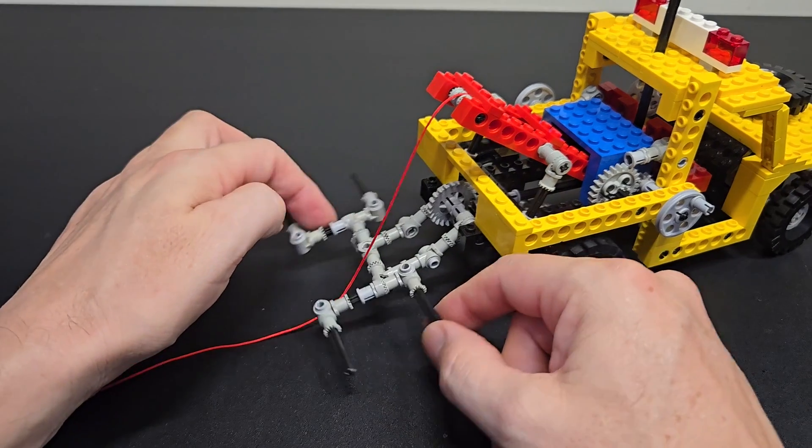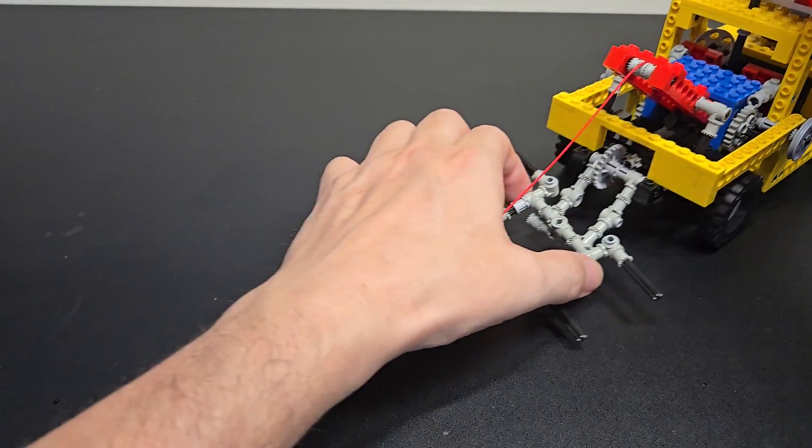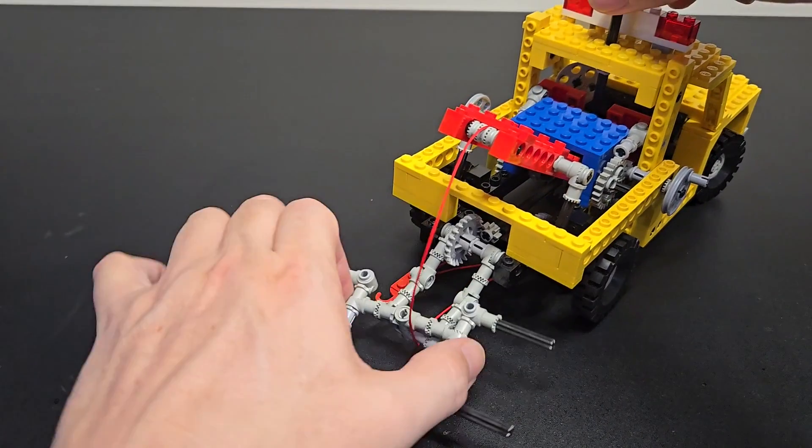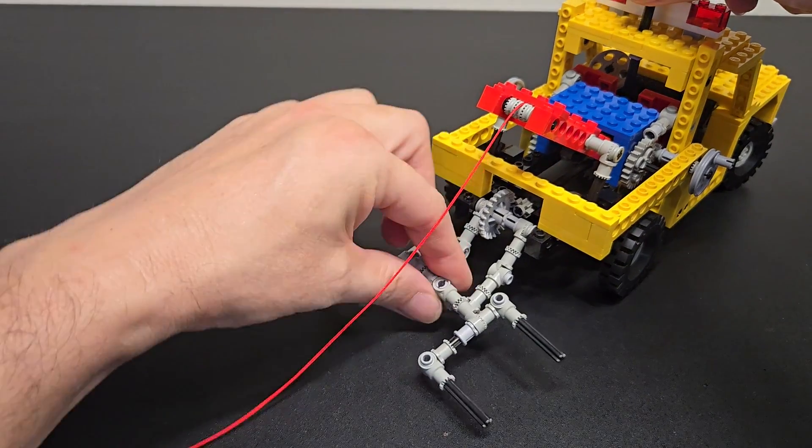Another nice part about the set is this swiveling here. If you're turning corners while towing, it's quite realistic that it will allow the angle like that to turn.